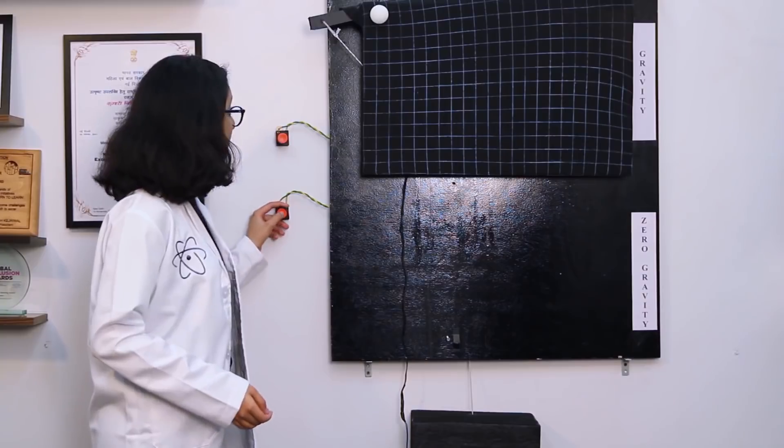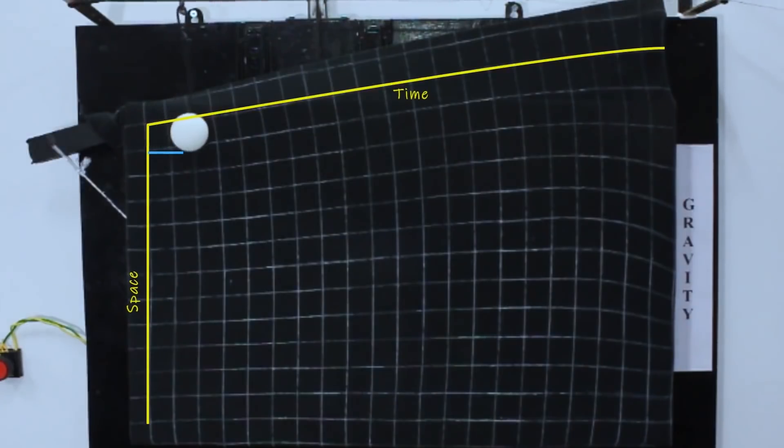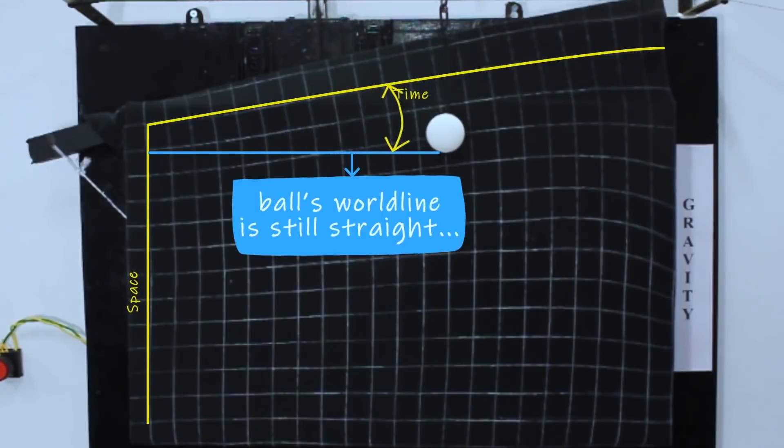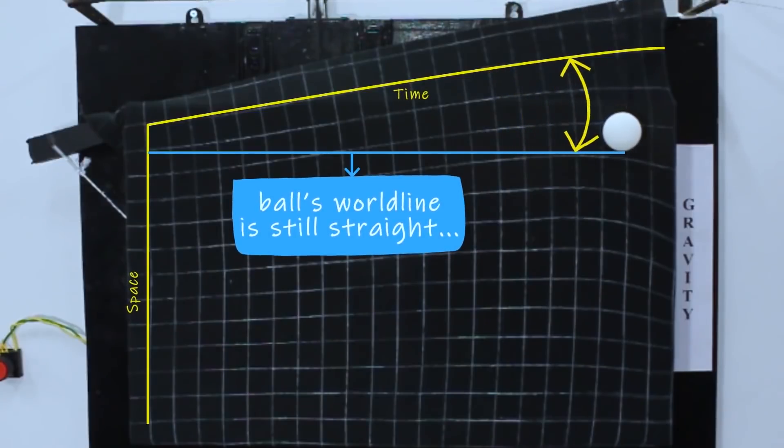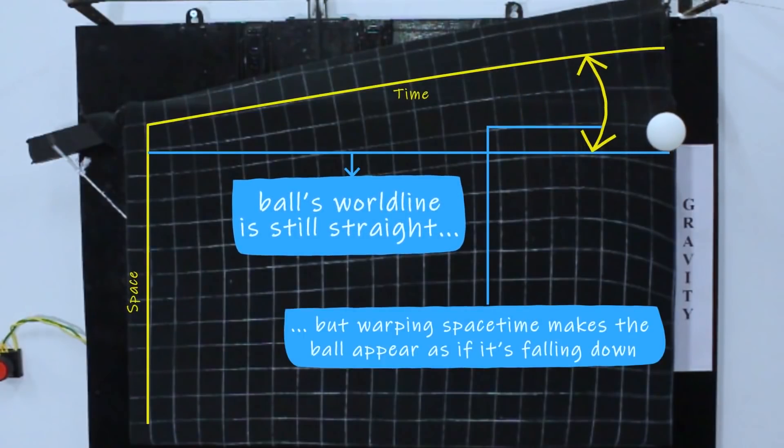But this time, because the space-time has warped, we can observe an increasing distance between the ball's world line and the axis. And the ball appears to be falling down due to gravity.